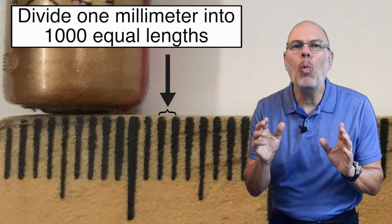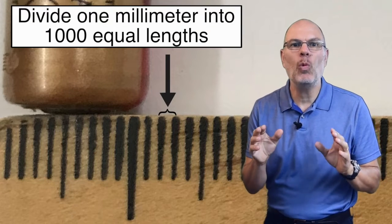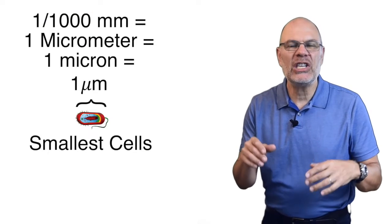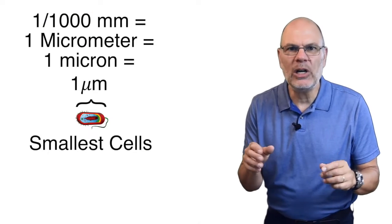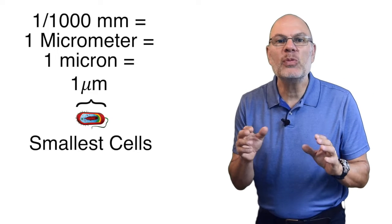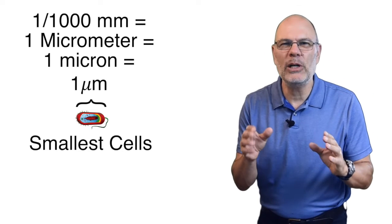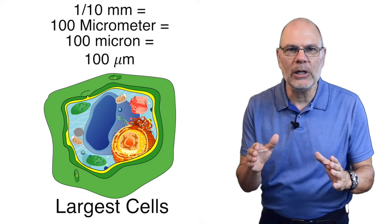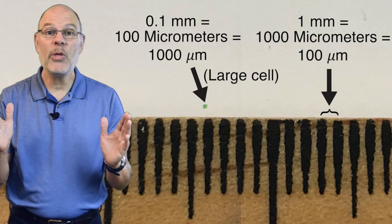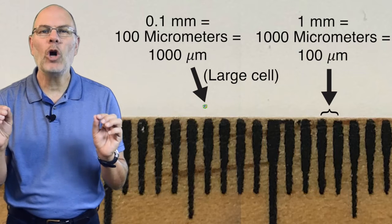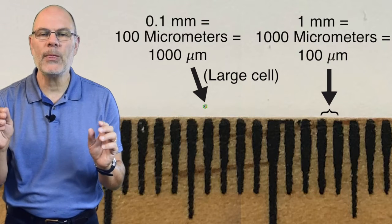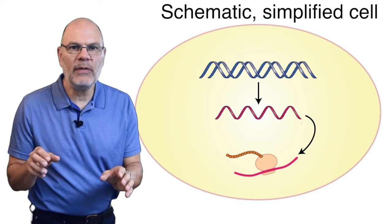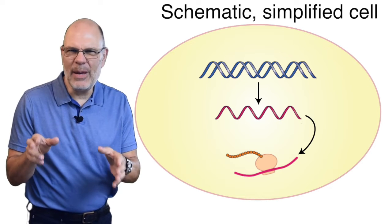Now, imagine taking one millimeter and dividing it into 1,000 equal lengths. Each one of those lengths is a micrometer, also called a micron. The smallest cells are less than a micrometer in size, and the largest are about 100 micrometers. A large cell is one-tenth of a millimeter. To get a sense of what these systems are like, let's simplify down to the bare minimum.